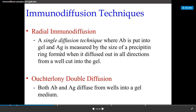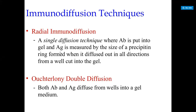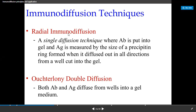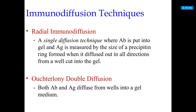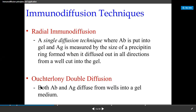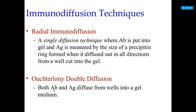There are two techniques involved in Immuno Diffusion. The first one is Radial Immuno Diffusion, which is a single diffusion technique. In this technique, an antibody is put into the gel and antigen is measured by the size of the precipitin ring formed as it diffuses out in the direction from a well. The second is Ouchterlony double diffusion, in which both antigen and antibody diffuse from wells into a gel medium.